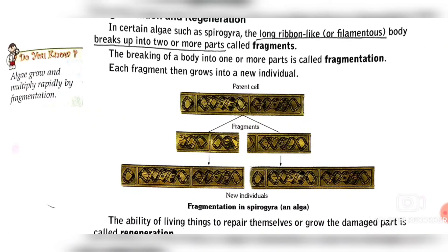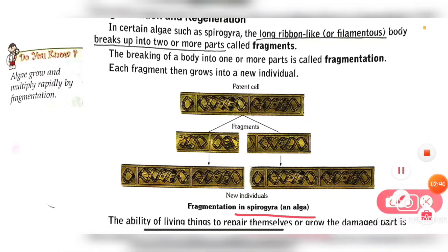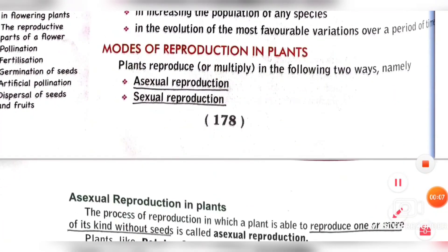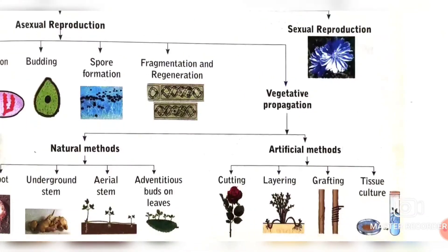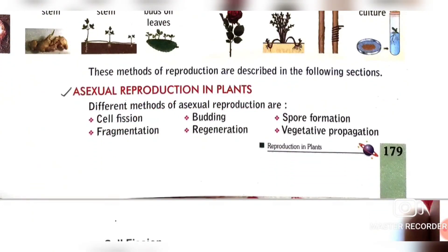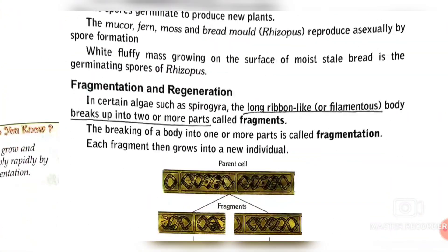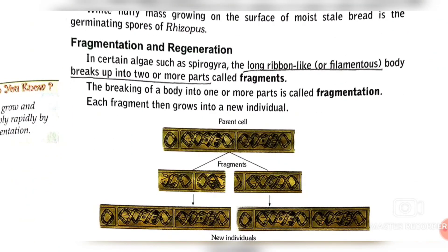This is a picture of Spirogyra, which reproduces by the fragmentation method. So today we have learned about reproduction: what is reproduction, the two methods of plant reproduction — sexual and asexual — and the different methods of asexual reproduction: cell fission, budding, spore formation, and fragmentation and regeneration. The only remaining method of asexual reproduction — vegetative propagation — we will learn about in our next lesson. Thank you.